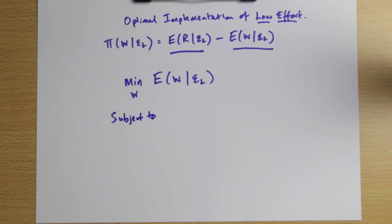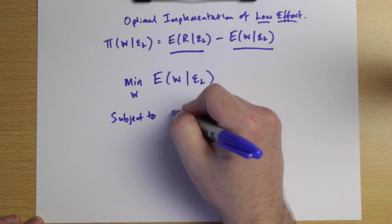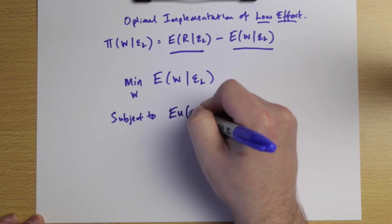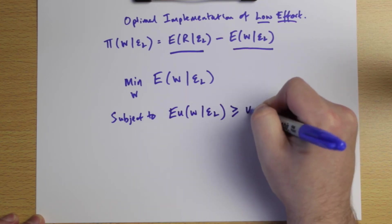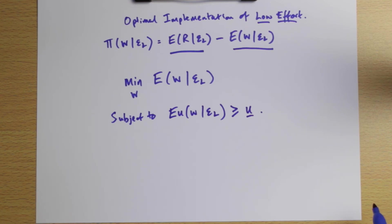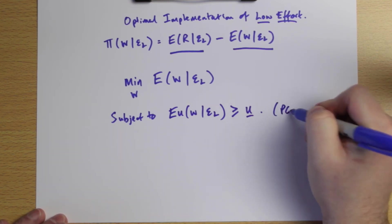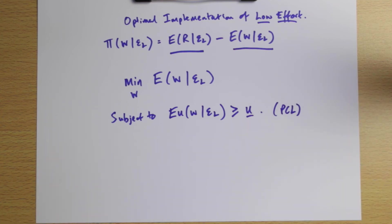Graphically, this means the contract has to be on or above the indifference curve we labeled PCL. Mathematically, the participation constraint says the expected utility of contract W conditional on the low level of effort must be at least as large as reservation utility. This is our participation constraint under the assumption of low effort.